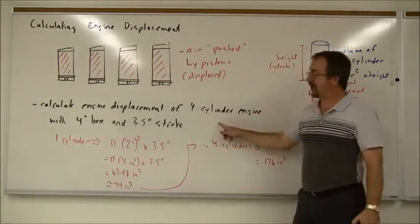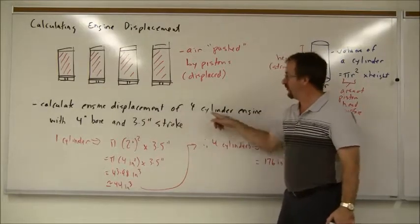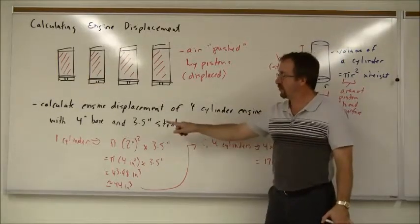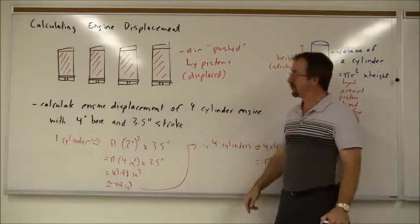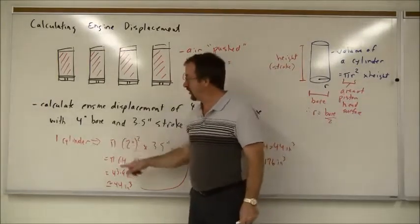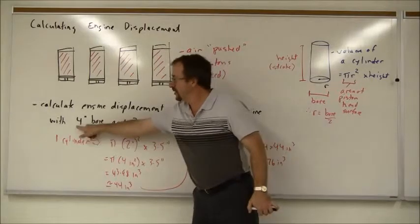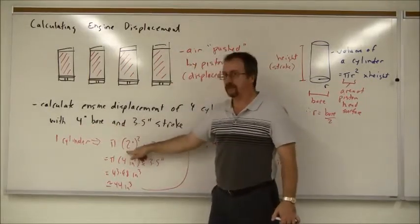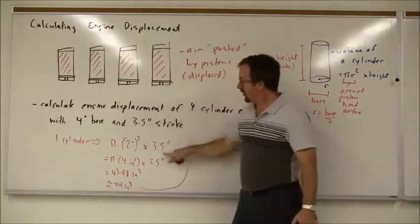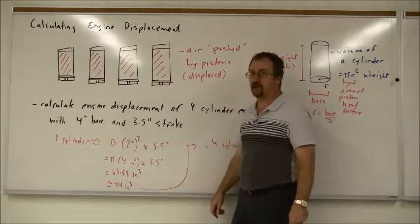So, looking at an example that we did in class, calculate the engine displacement of a four-cylinder engine with a four-inch bore and a three-and-a-half-inch stroke. Well, the formula for one cylinder is pi r squared times the height, where r is four-inch bore divided by two. And the height is three-and-a-half inches, the length of the stroke.